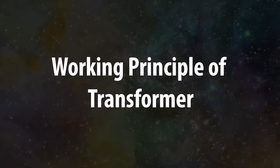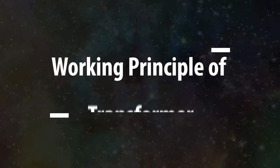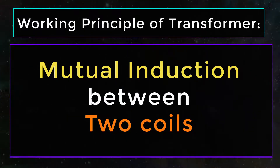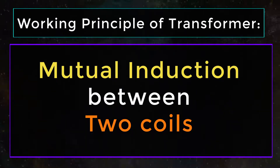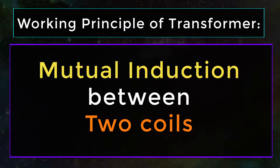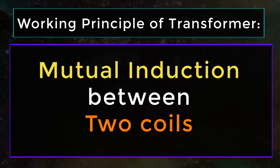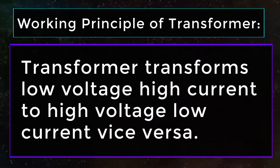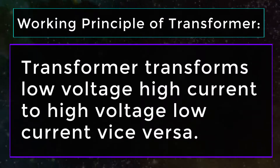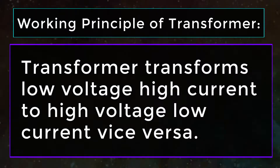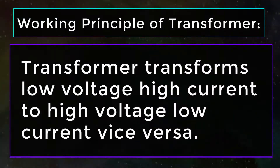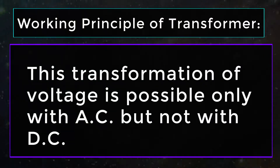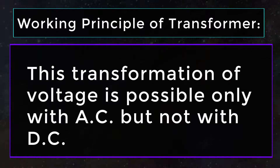Working Principle of Transformer. A transformer works on the principle of mutual induction between two coils — that is, whenever the current changes in one coil, an EMF induces in the neighboring coil. The transformer transforms low voltage high current to high voltage low current and vice versa. This transformation of voltage is possible only with AC but not with DC.